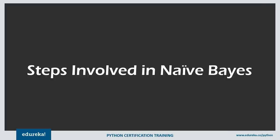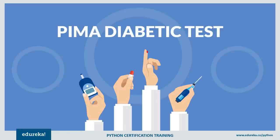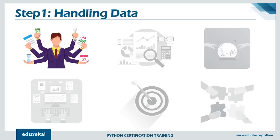Let's understand how this algorithm works step by step by building a Naive Bayes model to predict the onset of diabetes. This problem comprises 768 observations of medical details for Pima Indian patients, including measurements such as age, number of times pregnant, and blood work values. All patients are women aged 21 and older, all attributes are numeric, and each record has a class value indicating whether the patient suffered onset of diabetes within five years of the measurements.